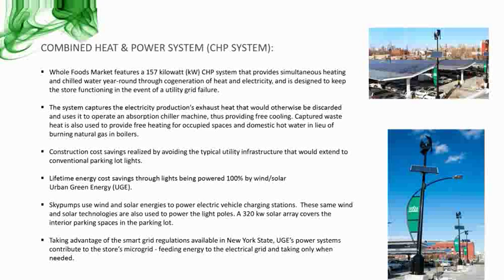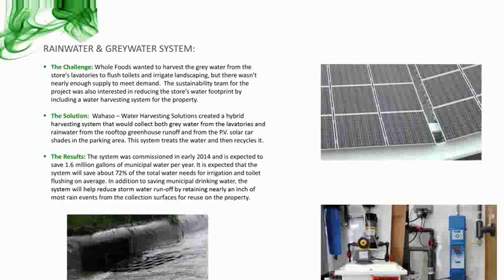Whole Foods also has a high-efficiency zero ozone depleting commercial refrigeration system, and lifetime energy cost savings through lights powered 100% by wind, solar, and urban green energy. Customers can charge their electric cars at charging stations in the market's outdoor parking lot. A first-of-its-kind 20,000-square-foot commercial-scale greenhouse on the rooftop is owned and operated by Gotham Greens, growing high-quality produce year-round. A hybrid water harvesting system collects both gray water from lavatories and rainwater from the rooftop greenhouse runoff and solar car shades in the parking lot — used in hand sinks. A single processing system treats both gray water and rainwater to a water-quality standard suitable for irrigation and toilet flushing.